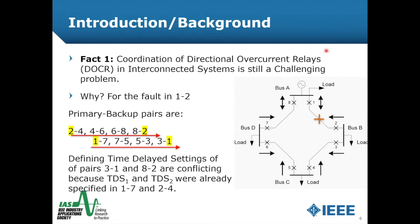Why? For this case, we identified four different buses and we check what happens if we get a fault in between relay one and two. We obtained the primary-backup pairs, starting from the fastest trip to the non-fast trip. The first pairs are 2-4, 4-6, 6-8, and 8-2. From the other side, we got 1-7, 7-5, 5-3, and 3-1. However, defining the time-delayed settings for pairs 3-1 and 8-2 could be a challenge.